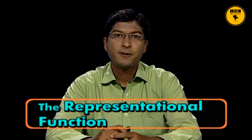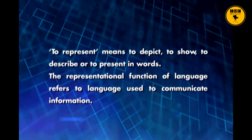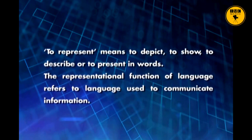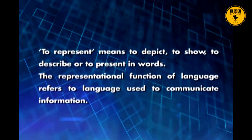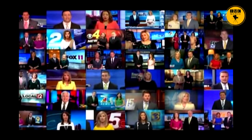The seventh and last function of language according to Halliday is the representational function. To represent means to depict, to show, to describe, or to present in words. The representational function refers to language used to communicate information — the use of language to convey a message which has specific reference to the processes, persons, objects, qualities, states, and relations of the real world around us. Examples include books, newspapers, magazines, novels, and the use of language in mass media. Therefore, the representational function refers to language used to communicate information.